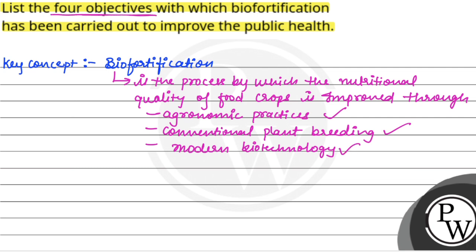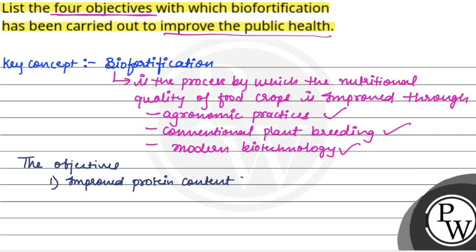We have to know the four objectives of biofortification by which we can improve public health. The objectives of biofortification to improve public health are: first, improved protein content and quality of the food crops. Second, improved oil content and quality. And third, improved vitamin content.